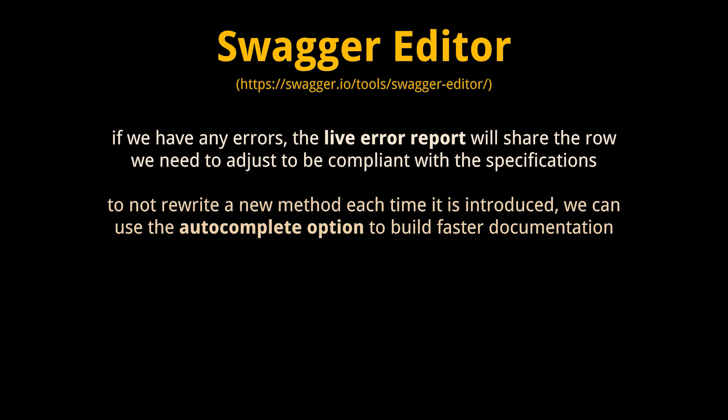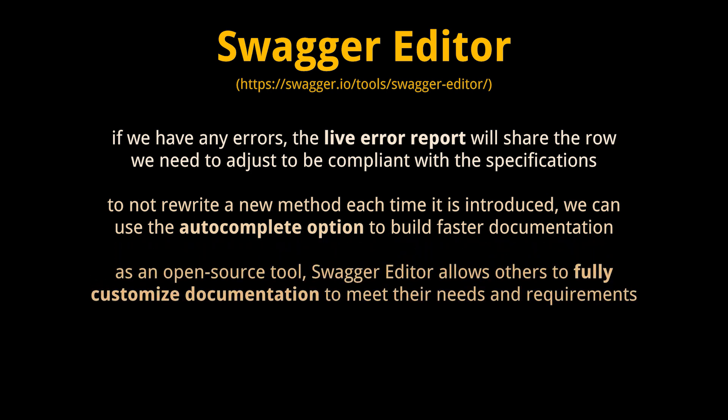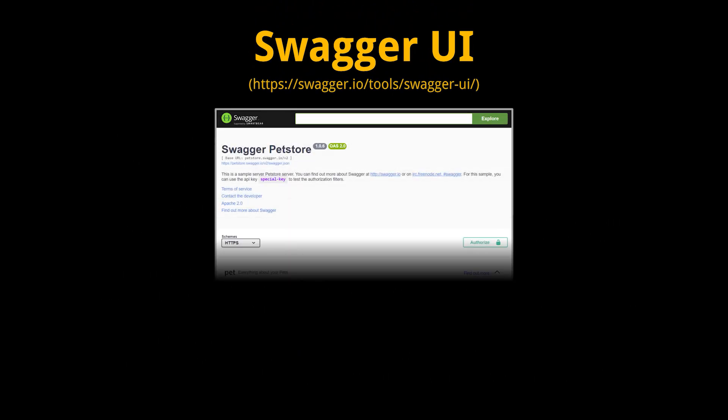To not rewrite a new REST method each time we introduce a new one, we can use the autocomplete option to build our documentation much faster. As an open source tool, Swagger Editor allows others to fully customize documentation to meet their needs and requirements. Swagger Editor makes it convenient for us to design our specifications before we dive into coding — the editor tells us exactly what the API will ask for, what the request will look like, and what response we can expect.